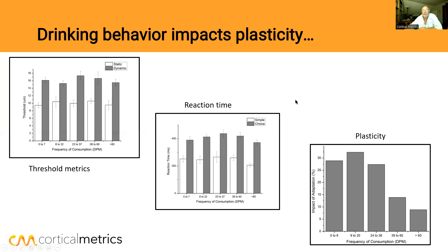Reaction time is a simple measure and doesn't require a lot of processing — a stimulus gets in and you respond. But looking at plasticity — the difference between amplitude discrimination and single-site adaptation — the normal difference is 25 to 30%. When subjects drank more than 60 drinks per month, they had significantly reduced plasticity. This has a lot of implications for people that age and raises the question of whether drinking that much would have a similar impact on people of other ages.